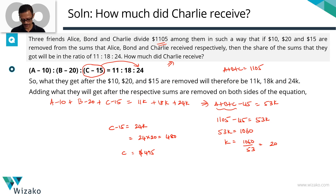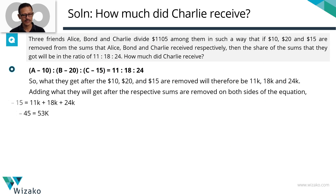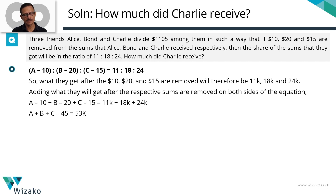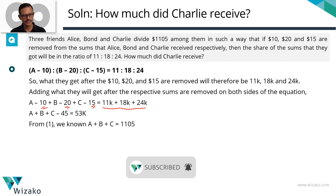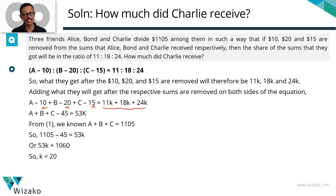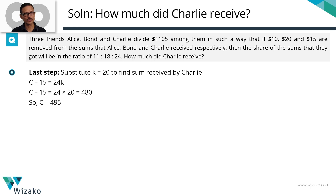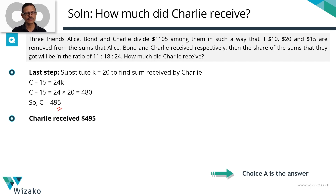To summarize: A minus 10 plus B minus 20 plus C minus 15, assigning the factor K and adding up the right-hand side, gives A plus B plus C minus 45 equals 53k. Solving for K by replacing A plus B plus C with 1105, we get K equals 20. We know C minus 15 equals 24k; substituting K as 20 gives C equals 495. Charlie received $495, and choice A is the correct answer.